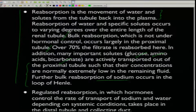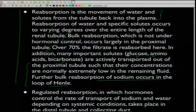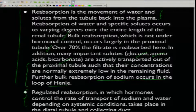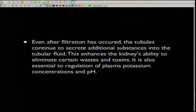Bulk reabsorption, not under hormonal control, occurs largely in the proximal tubule where over 70 percent of the filtrate is reabsorbed. Important solutes like glucose, amino acids, and bicarbonates are actively transported out of the proximal tubules. Further bulk sodium reabsorption occurs in the loop of Henle, while regulated reabsorption controlled by hormones takes place in the distal tubule and collecting duct. Tubular secretion also enhances the kidney's ability to eliminate waste and regulate potassium and pH.